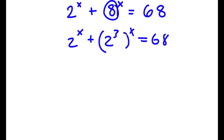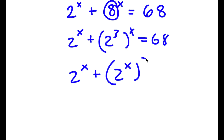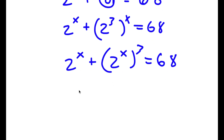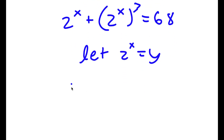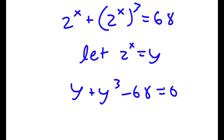I can switch the exponents, so I get 2 to the power of x plus 2 to the power of x to the power of 3 is equal to 68. Now I'm going to let 2 to the power of x equal to the variable y, so now I have y plus y to the power of 3 minus 68 is equal to 0.